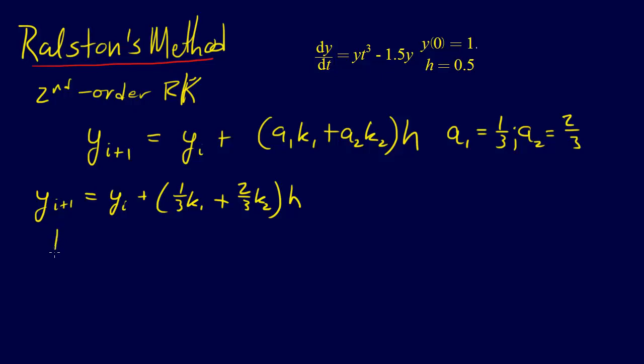And then K_1 is the same K_1 as it has been before. It's F of, and I'm going to use the X's here again because it's the general X_i Y_i, and we'll make this particular for our problem in a minute. And then K_2 equals F of, and this is where it's different. So it's X_i plus 3/4, 3/4 H. And then we have Y_i plus 3/4 H times our slope of K_1.